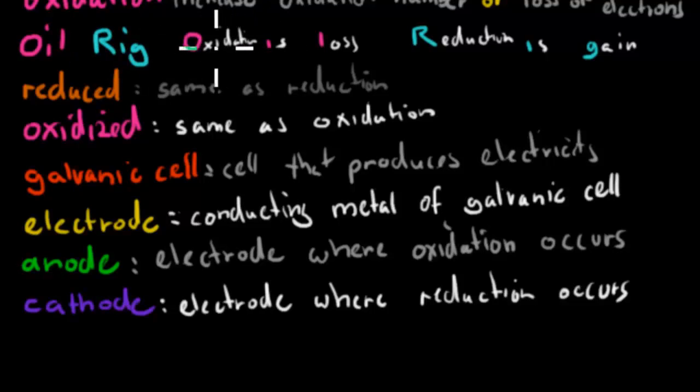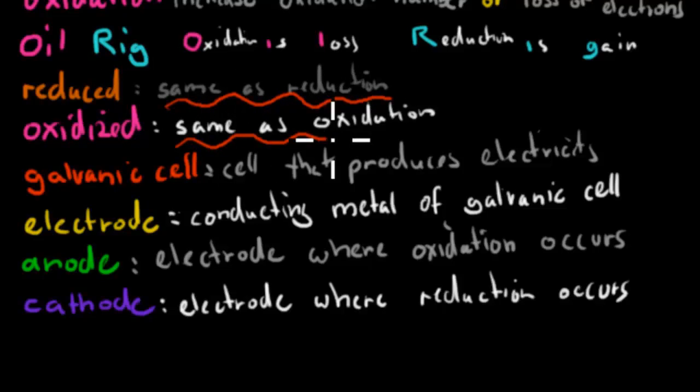OILRIG, that was the acronym. OIL stands for oxidation is loss. RIG stands for reduction is gain. Reduced, again that's the same as reduction, just a different term that sometimes gets used. Oxidized is the same as oxidation. So oxidized means it's lost electrons. Reduced means it's gained electrons.